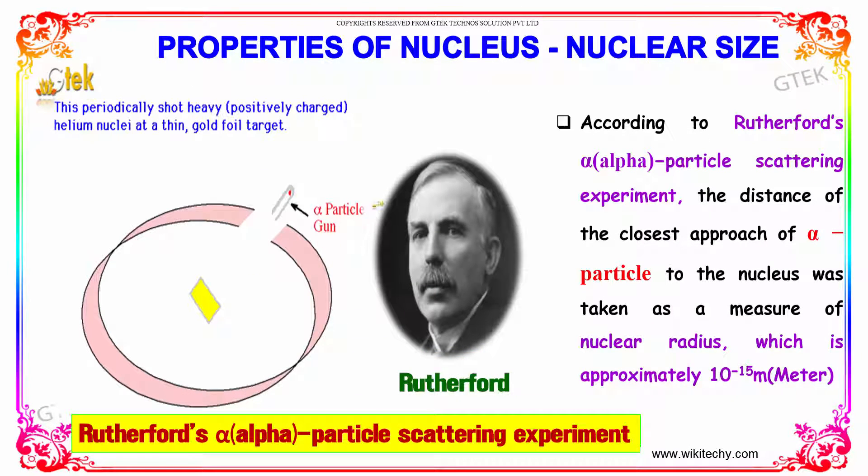The great physicist Mr. Rutherford did some validations using alpha particle. According to Rutherford's alpha particle scattering experiment, the distance of the closest approach of alpha particle to the nucleus was taken as a measure of nucleus radius, which is approximately 10 power minus 15 meter. You are able to see Rutherford doing an alpha particle experiment which indicated there is something in the center which is deflecting.